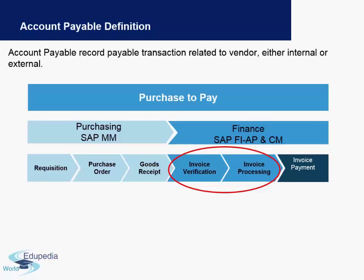Let's discuss the purchase-to-pay process first to understand the financial impact. There will always be a purchase requisition, on the basis of which a purchase order is created by the procurement team in the organization. Once the purchase order is created and you have received the goods, the goods receipt takes place in the system.